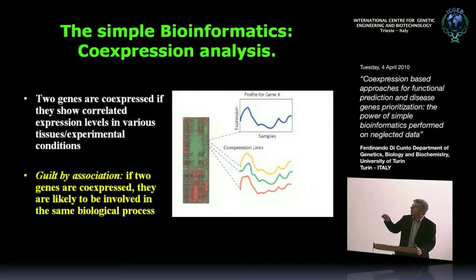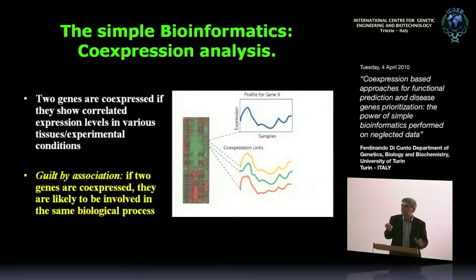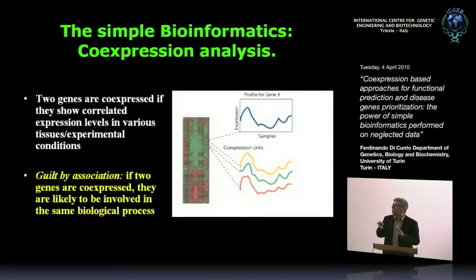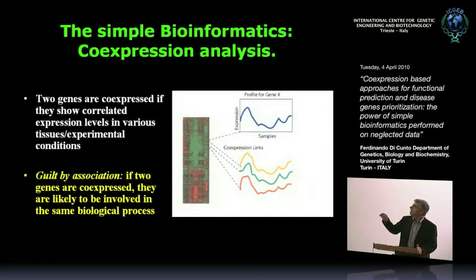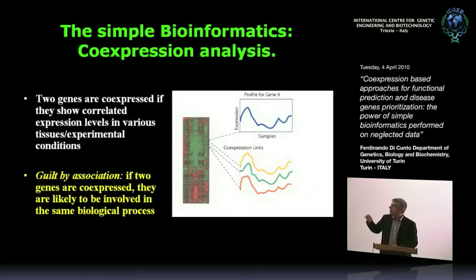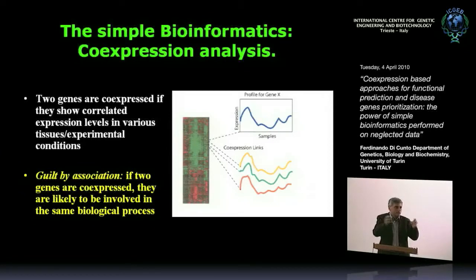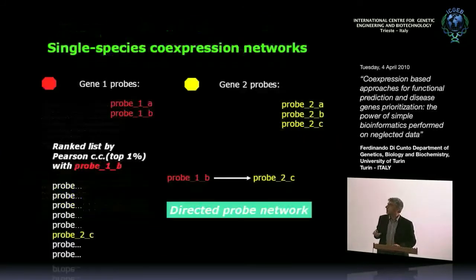The principle we use is a simple 'guilty by association' principle: if two genes are co-expressed, they are likely to be involved in the same biological process. What we do is put together huge datasets of microarray data and apply this simple principle.